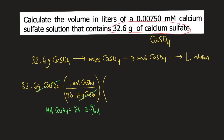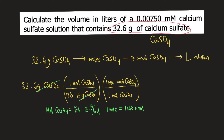In order to convert moles of calcium sulfate to millimoles of calcium sulfate, you must always remember that one mole is equivalent to 1,000 millimoles. So you put one mole of calcium sulfate at the bottom and 1,000 millimoles of calcium sulfate on top, so moles of calcium sulfate will cancel. Now you have millimoles of calcium sulfate.